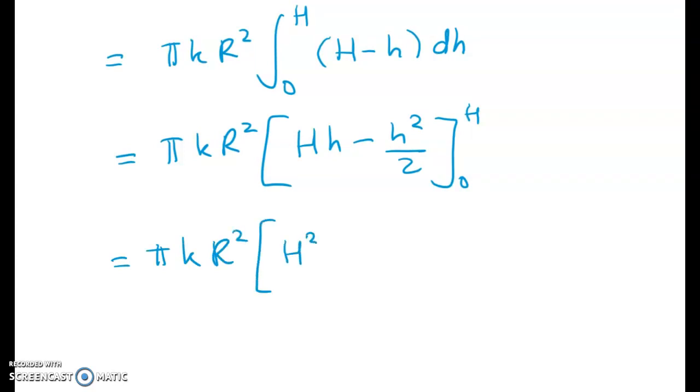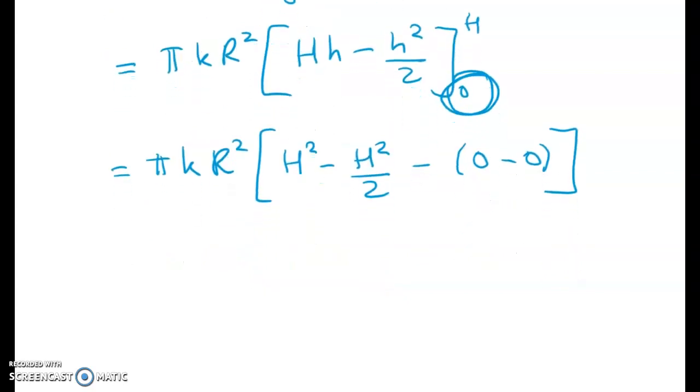So we have H big H squared minus half of big H squared minus zero minus zero. Now remember that whenever you're doing integration never just ignore that lower limit because it can cause some nasty surprises especially with trig functions like cosine of zero.